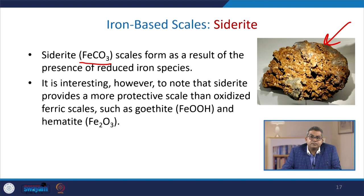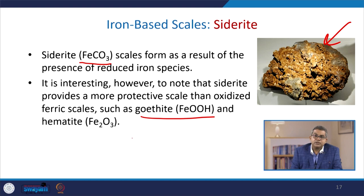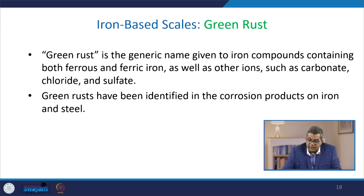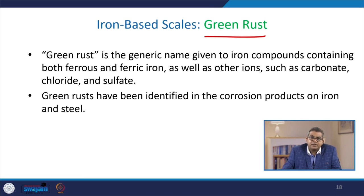Iron scales are very heterogeneous, consisting of a large variety of compounds. One iron-based scale, siderite (FeCO₃), forms as a result of reduced iron species. Notably, siderite provides a more protective scale than oxidized ferric scales such as goethite (FeOOH) and hematite (Fe₂O₃). Green rust is the generic name given to iron compounds containing both ferrous and ferric iron, as well as ions such as carbonate, chloride, and sulphate, and has been identified in corrosion products on iron and steel.